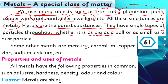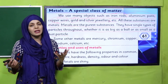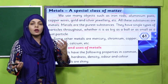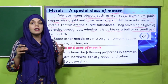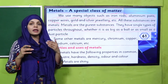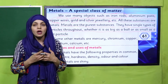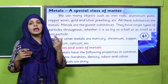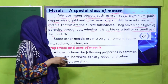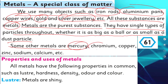Whether it is as big as a ball or as small as a dust particle, metals have the same type of particles throughout — they are the purest form. In your home you have various metal objects: gold, silver, copper, iron, aluminium are all metals. There is no change in particle type — they are all of the same type. Some other metals include mercury, chromium, copper, zinc, sodium, and calcium.